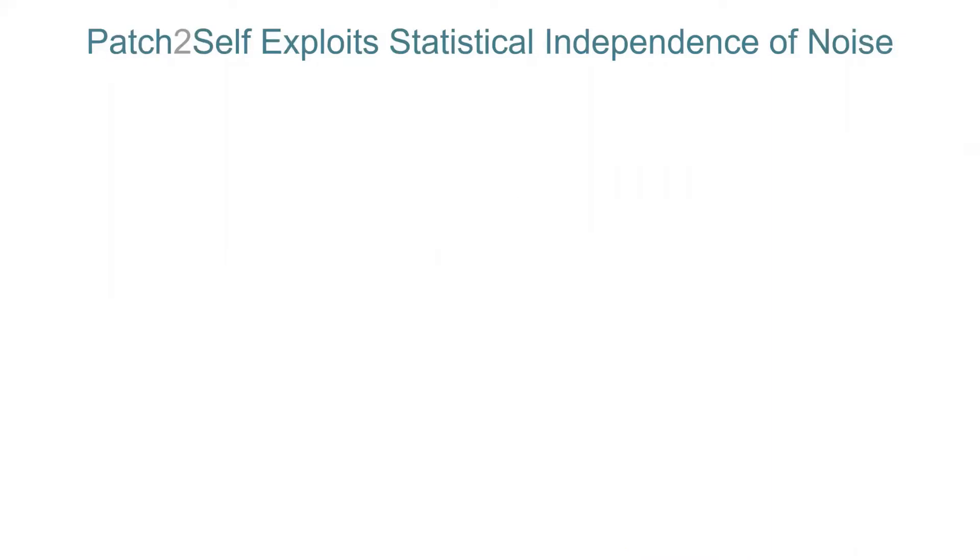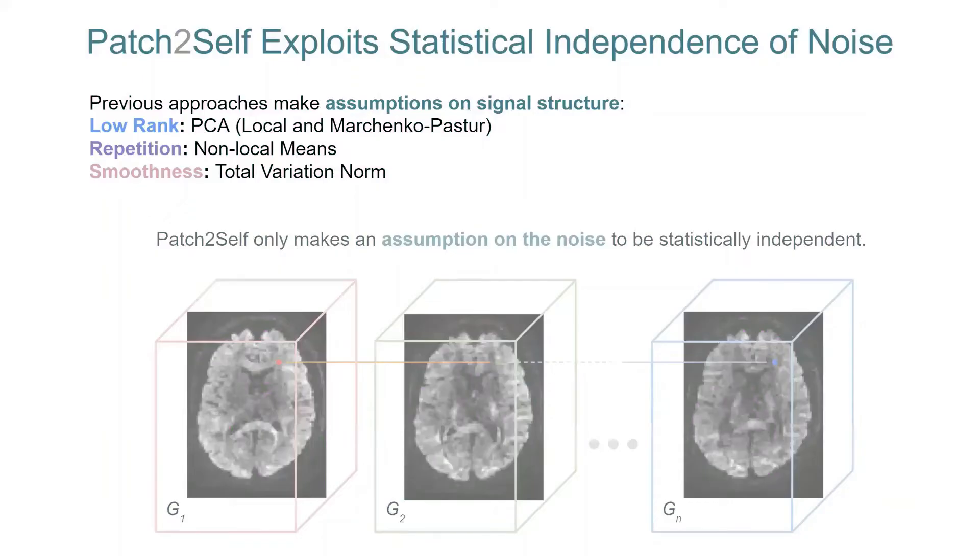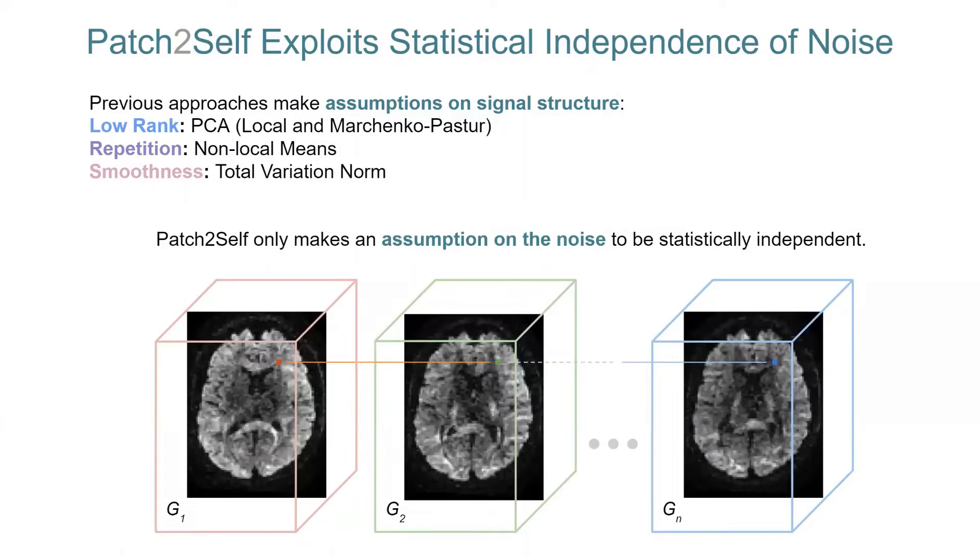So in order to suppress noise, we build a denoiser that uses the statistical independence of noise. As opposed to previous methods, which are famous in diffusion MRI, they use one of three approaches. One is that it could be low rank. That is what is done in PCA. If you had to do non-local means, it is trying to use the fact that the signal is repetitive all over the image. And if you had to use the total variation norm, you would assume that the signal is locally or globally smooth. Whereas in Patch2Self, we switch this assumption. So instead of making an assumption on the signal, we are making an assumption on the noise.